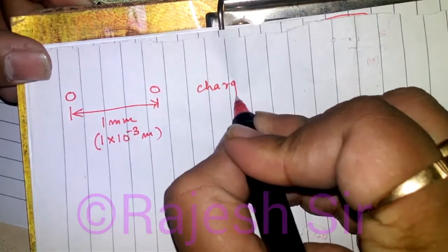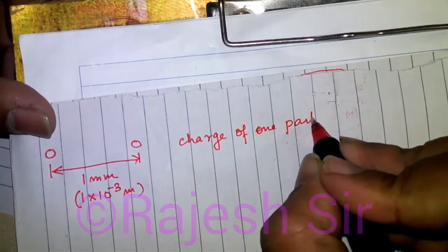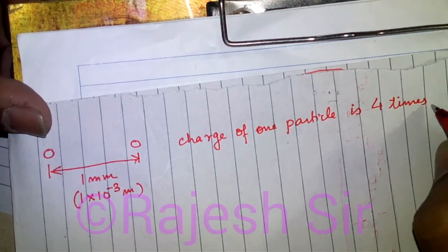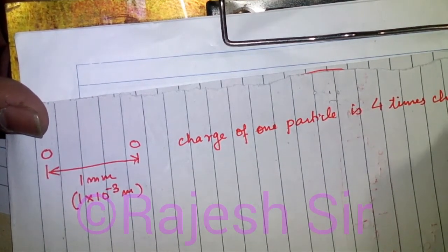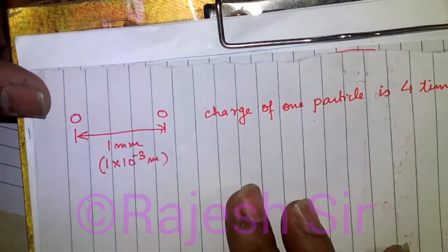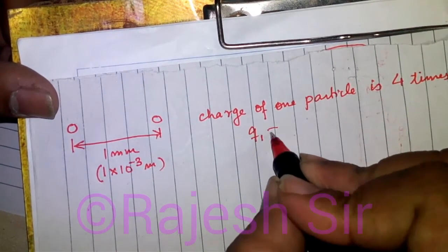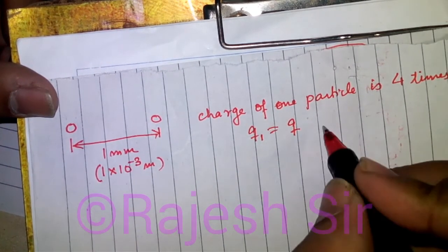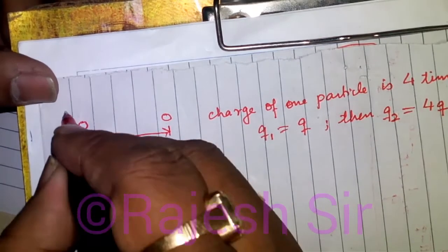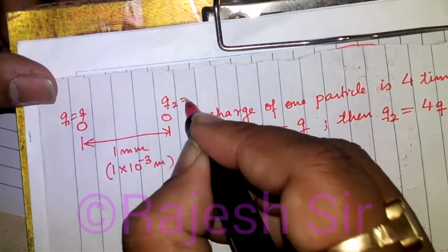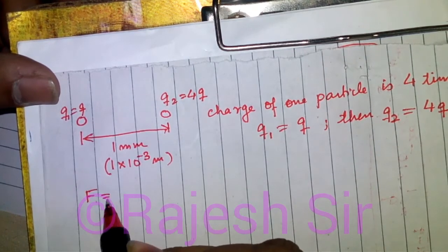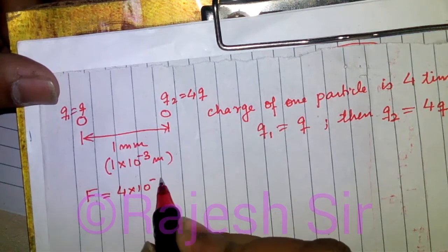The question says the charge of one particle is 4 times the charge of the other. If I consider the charge of one particle to be q, so q1 equals q, then q2 must be equals to 4 times of q. The force of repulsion between these two dust particles happens to be 4 into 10 to the power of minus 5 Newton.